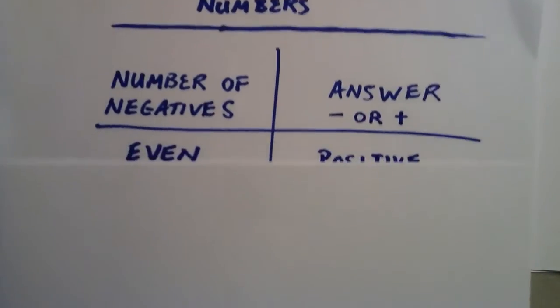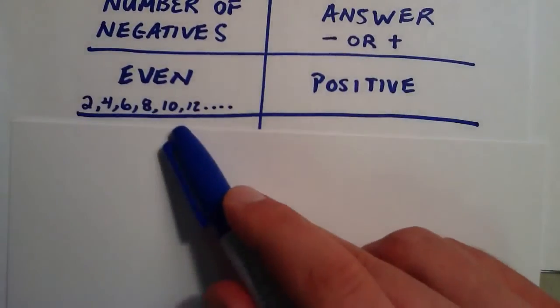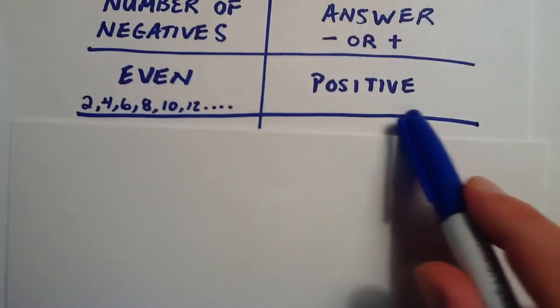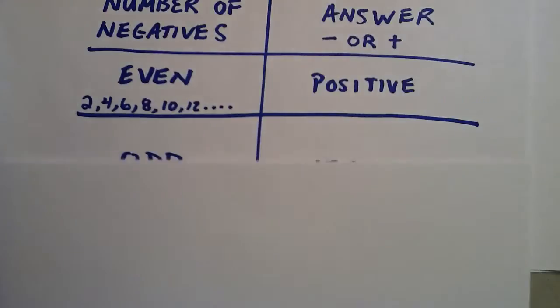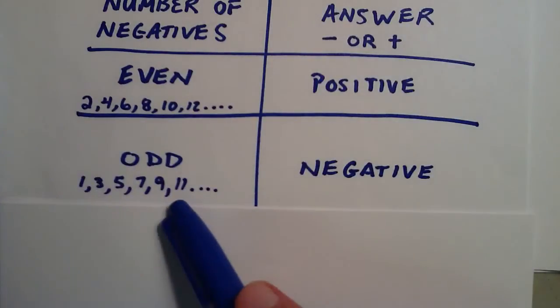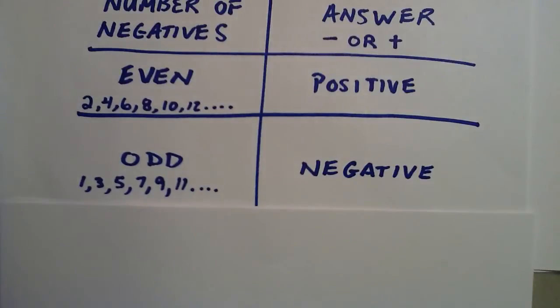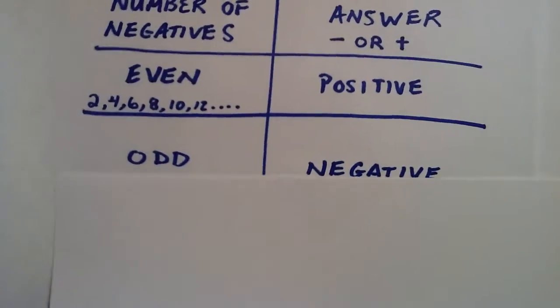For instance, if we have an even number of negatives multiplied in our product, then we will have a positive answer. And if we have an odd number of negatives multiplied in our product, our answer will be negative. Let me show you a couple examples of this.